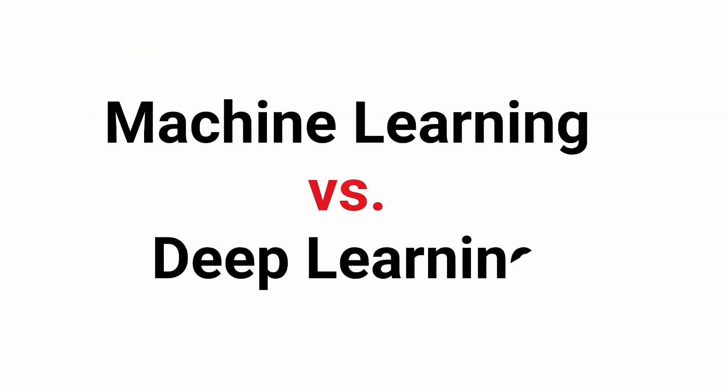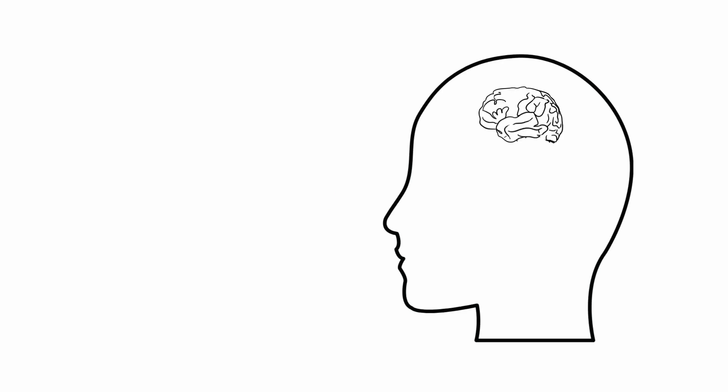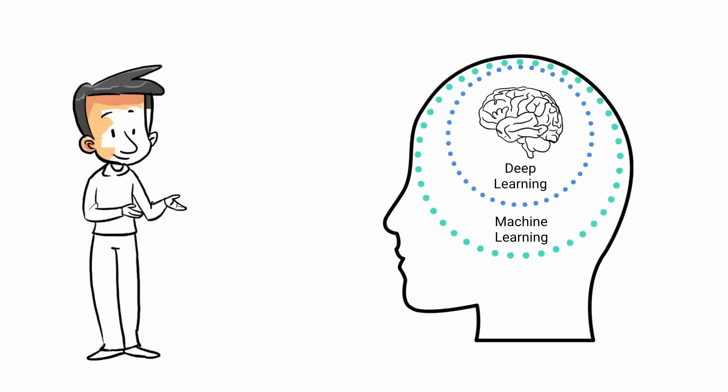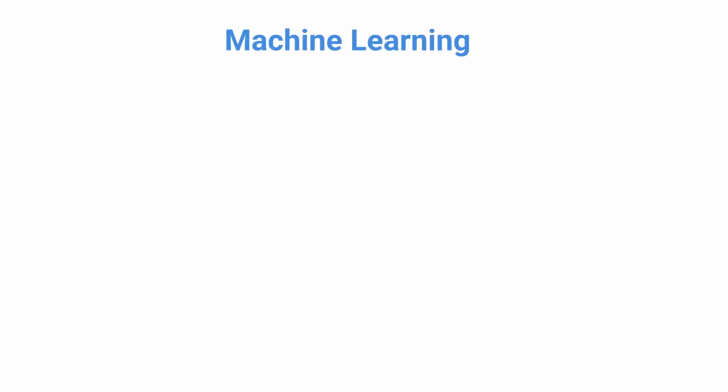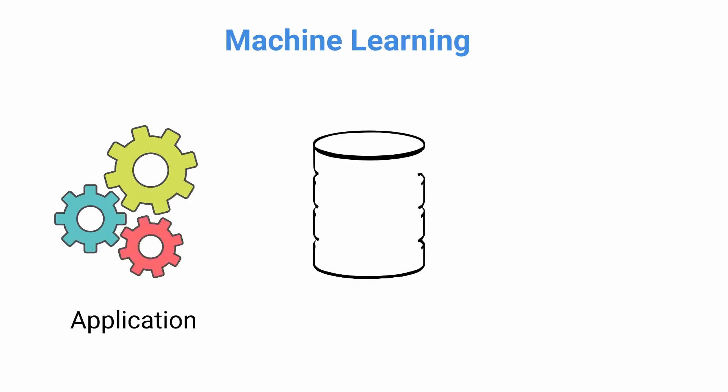Machine learning versus deep learning. Deep learning is part of machine learning. However, discussions often include deep learning versus more traditional machine learning. Machine learning offers a variety of techniques and models you can choose based on your application, the size of data you are processing, and the type of problem you want to solve.